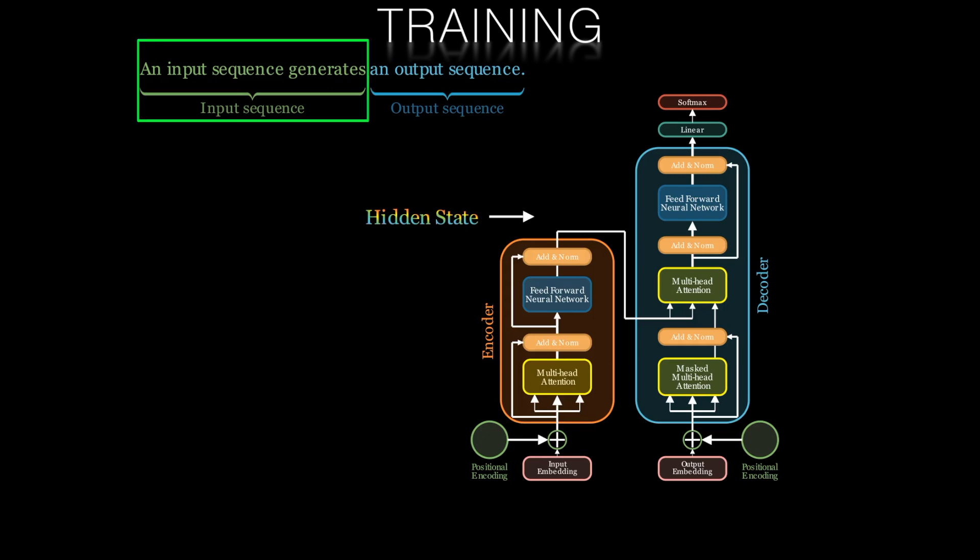For this illustration, our input sequence will be the first part of the sentence: 'an input sequence generates.' And our output sequence will be 'an output sequence.'